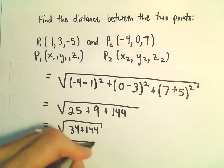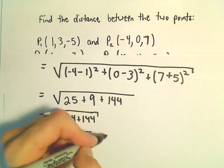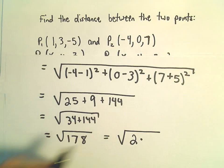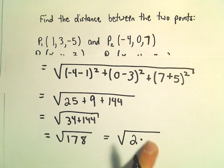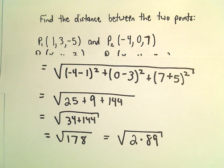So you could always see if this simplifies. We can write 178 as 2 times, well, 2 times 90 would be 180, so 2 times 89 should give us 178. And 89, I do believe, is a prime number.